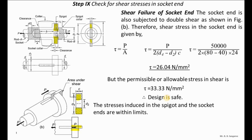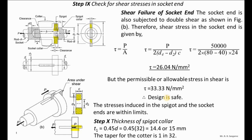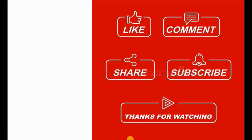All induced stresses in socket and spigot ends are within permissible limits, so the design is safe. Finally, the thickness of the spigot collar t1 = 0.45d = 14.4 mm, taken as 15 mm. The taper of the cotter is 1 in 32. Thank you.